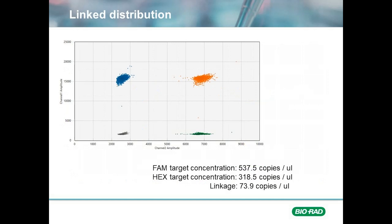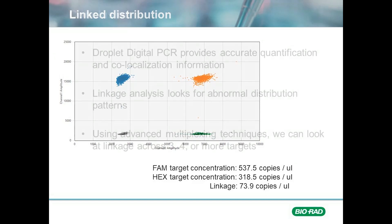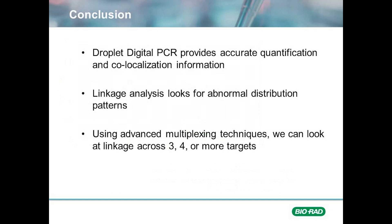We apply Poisson distribution analysis to determine accurate concentrations for both FAM and HEX targets — in our case, target A and target B — as well as the number of linked molecules. In conclusion, using Droplet Digital PCR and combining simple assays can not only provide accurate quantification of the targets of interest, but also give us information on their spatial distancing. Linkage analysis uses variations in what would be the normal distribution of randomly distributed events. Remember that the principle can be expanded to more targets using advanced multiplexing and more fluorophores.